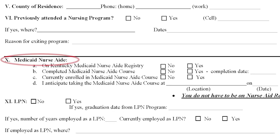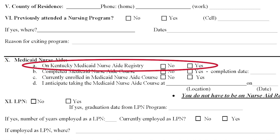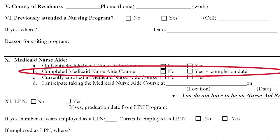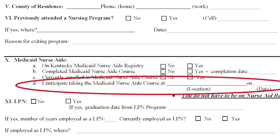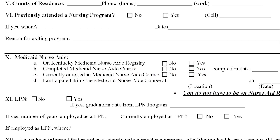Next is the Medicaid nurse aide section. If you are currently on the registry and you're active, you'll select 'Yes' and you'll need to provide proof of that. If you have completed the course but have not taken the state test, you're going to select 'Yes' and tell us what year you completed it. The next option is whether you're currently enrolled, or if you anticipate taking this course — indicate where and when. For the March 1st deadline, you can still be planning to take the course, but you must complete it before August classes begin.